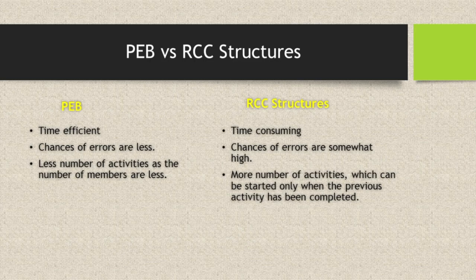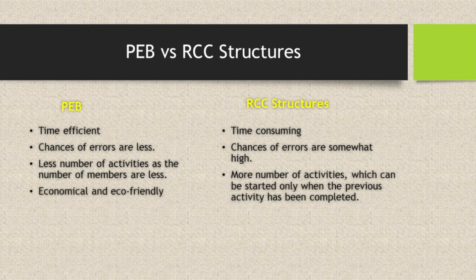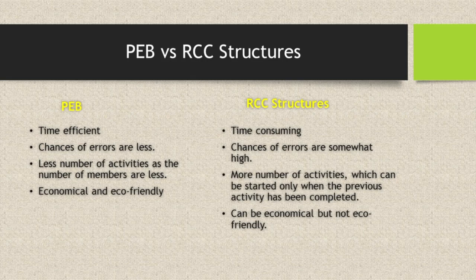In the process, cement, sand, and aggregates can still be used for minor works. But tiles, paint, electrical works, and plumbing works — these materials are very limited. PEB structures are economical and eco-friendly, whereas RCC structures are also economical but less eco-friendly since RCC construction emits more CO2.